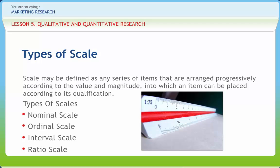The Ratio Scale has absolute rather than relative quantities and possesses an absolute zero, where there is an absence of a given attribute. Data represents the actual amount of a variable. Ratios between numbers are meaningful. Financial researchers use this scale because mean, median, mode, and geometric averages are valid. It uses physical attributes such as weight and distance. To contrast interval and ratio scale, consider the temperature scale.